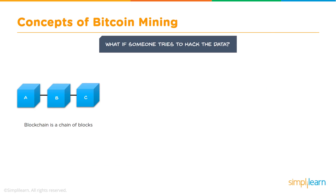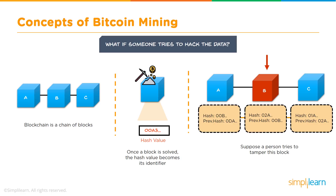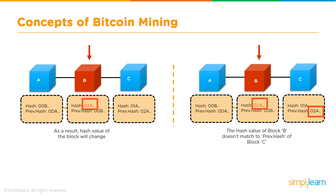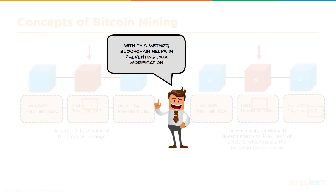If someone tries to hack the blockchain — say, tampering with block B in a chain A-B-C — changing block B's data changes its hash value, corrupting all subsequent blocks because block C's stored previous hash no longer matches. To make the entire chain valid again, the hacker would have to recompute the hashes of all blocks after B, requiring an enormous and practically impossible amount of computing power. This ensures the blockchain remains non-hackable and prevents data modification.